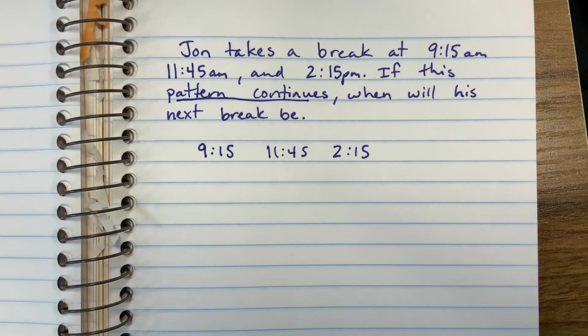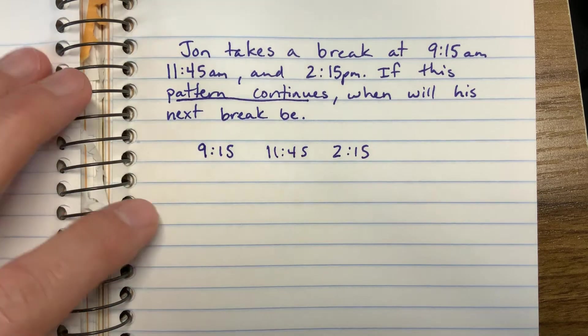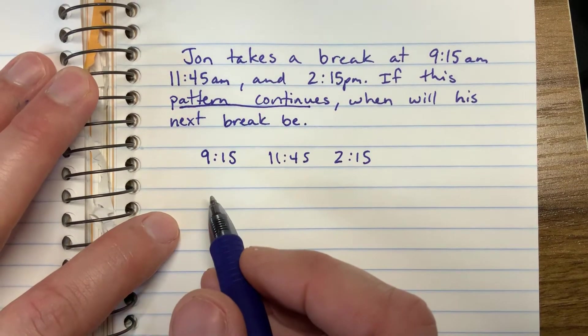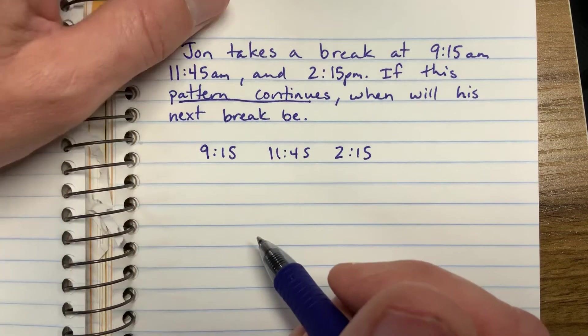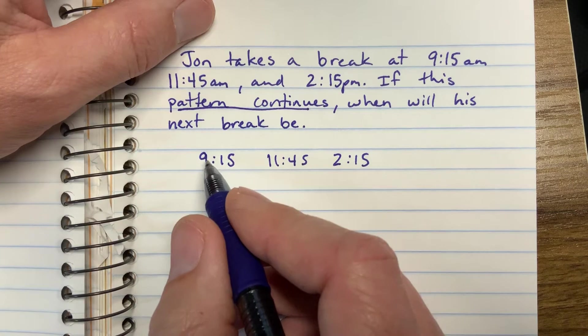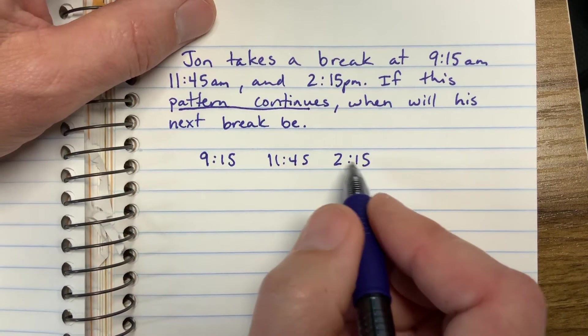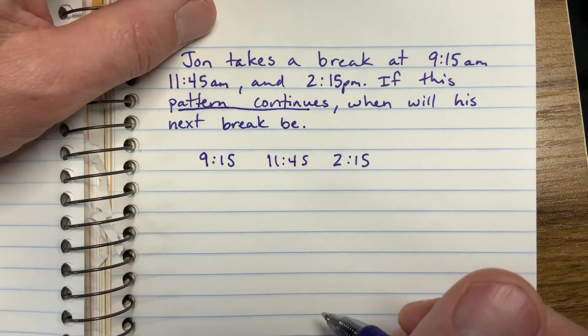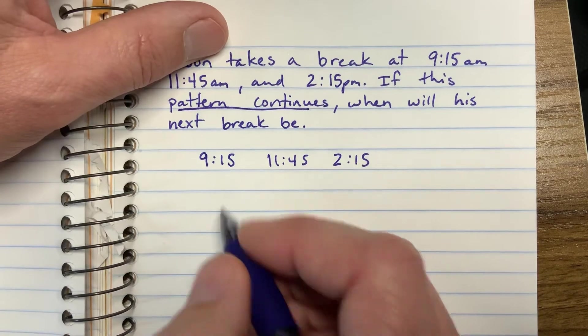Time goes from 0 to 60 and then starts over again, right? Because every hour is 60 minutes. So when you get to the end of the hour, you start back at 0 again at the top of the hour. So we can't use regular math to find the difference between numbers with time. I've got to think about this differently.